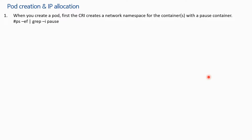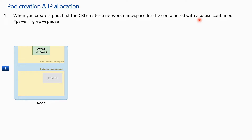Now let's see how pod creation and IP allocation actually happens. As soon as we create a pod, first the CRI — the container runtime interface, either Docker or containerd or whatever CRI you are using — creates a network namespace for the container or containers with a pause container. This is a new concept we are learning right now. Remember that with every pod there is a pause container which is not normally visible to us.